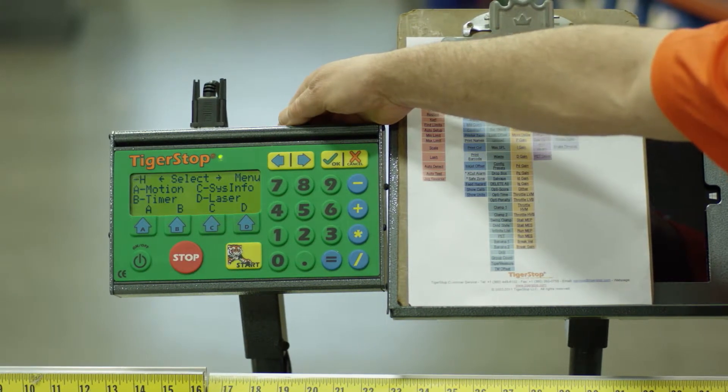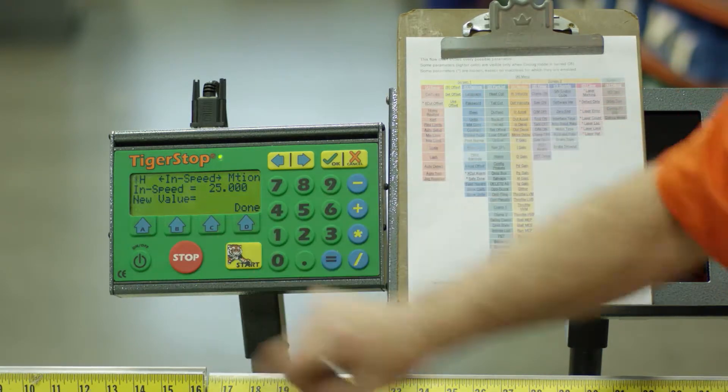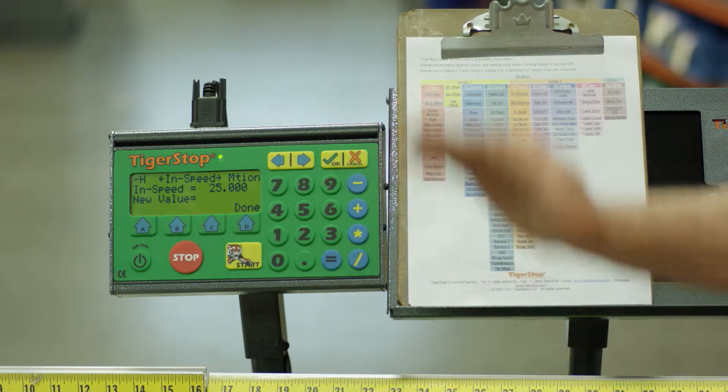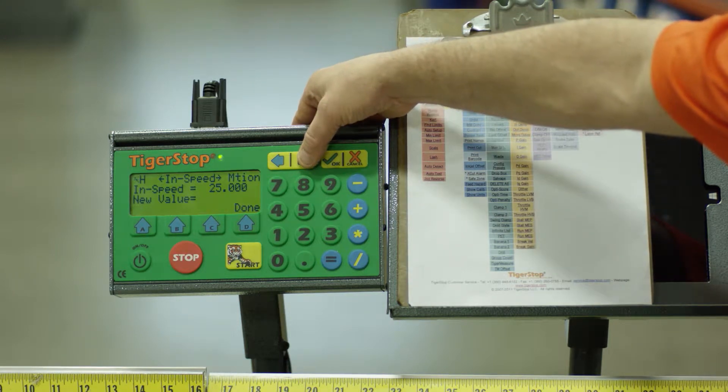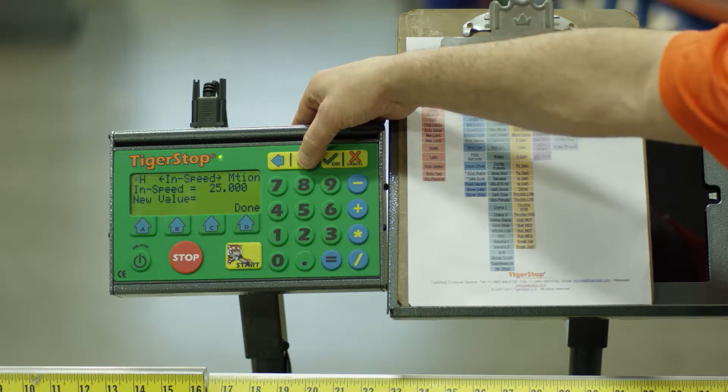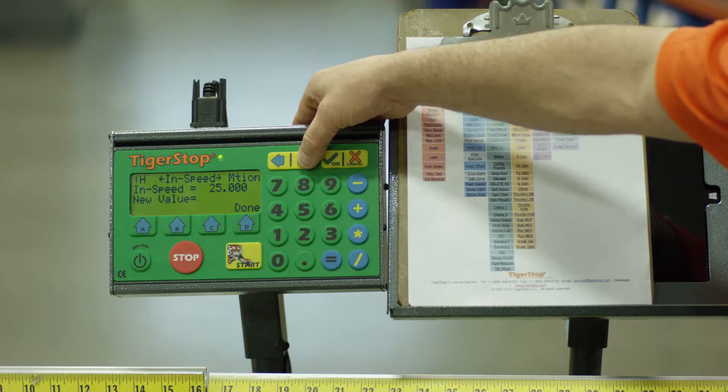This setting resides under the motion menu, which is A. When I've pressed A, I'm now in that motion setting. I'm going to use the right arrow at the top to scroll down to that particular move delay setting.